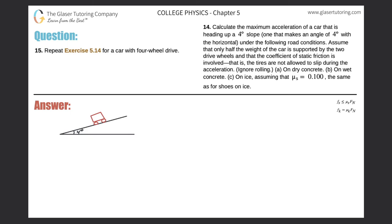Problem 15 is a repeat of exercise 5.14 but for a car with four-wheel drive. I copied and pasted number 14 in here. We're trying to find the maximum acceleration on a four-degree slope — specifically on dry concrete for part (a). I'll go through this a little faster; if you need more help, feel free to check out question 14 where I went into detail about how everything works.